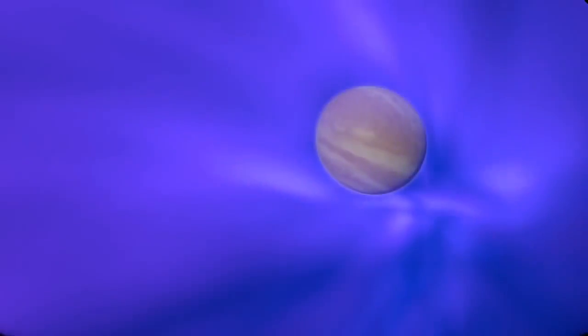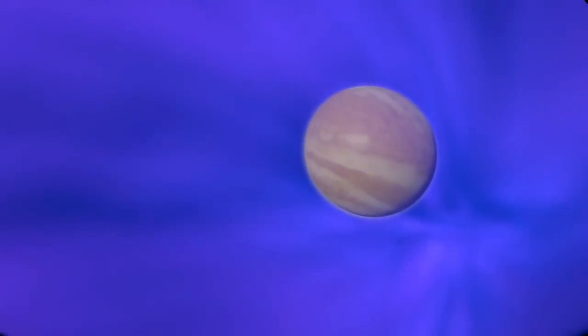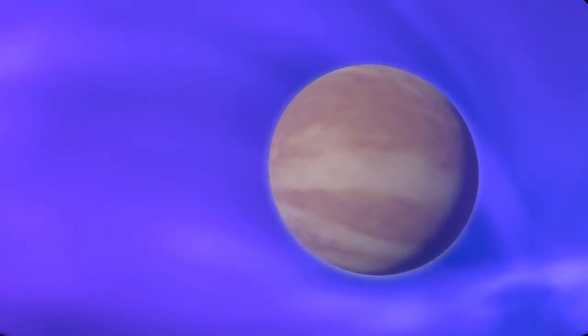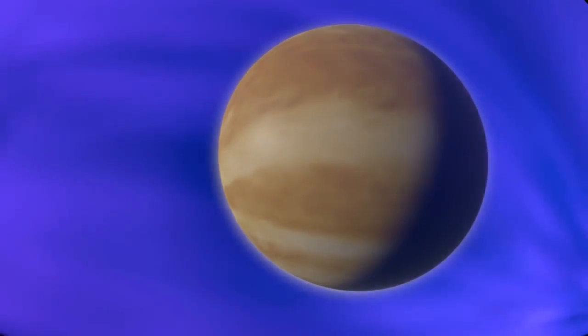Venus is the size of Earth, but rotates so slowly that no dynamo could form in its core. The solar wind bombards its atmosphere directly.